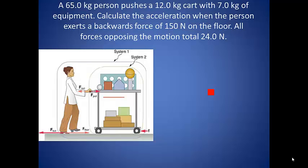Suppose you have a 65 kg person pushing a 12 kg cart with 7 kg of equipment. Calculate the acceleration when the person exerts a backwards force of 150 N on the floor. All forces opposing the motion total 24 N.